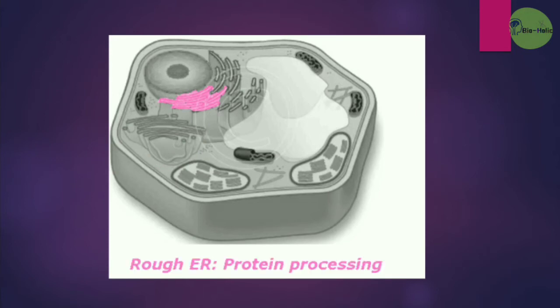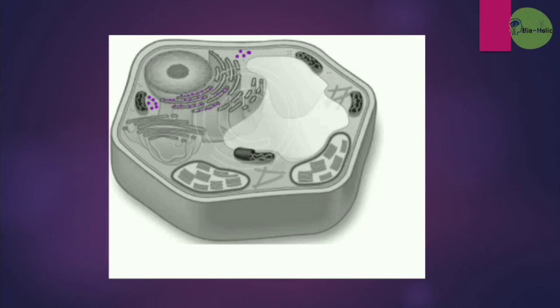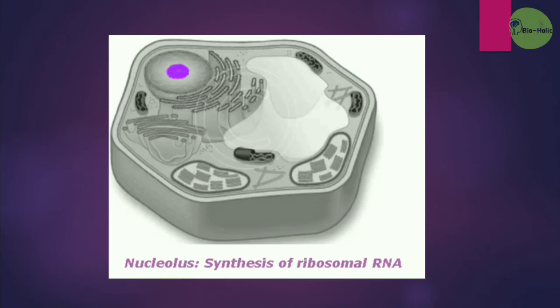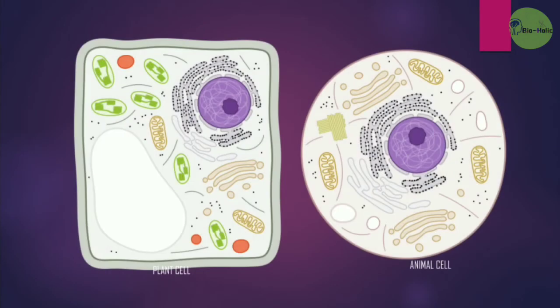Then the rough endoplasmic reticulum for protein processing. Then small structures known as ribosomes for protein synthesis. Then the main portion — the nucleus — which possesses DNA and a nucleolus; this nucleolus synthesizes ribosomal RNA. A plant cell differs from an animal cell: in the plant cell you will find the cell wall, chloroplast, and central vacuole. In the animal cell there is no chloroplast or cell wall, vacuoles are very small and not centrally placed, and there are extra organelles known as the centrosome and centriole.